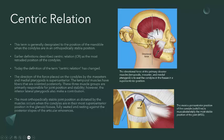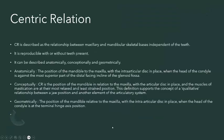The articular eminence is just close to the glenoid fossa. Centric relation is described as the relationship between the maxillary and mandibular skeletal bases, independent of the teeth. It is reproducible with or without teeth present. It can be described anatomically, conceptually, as well as geometrically.